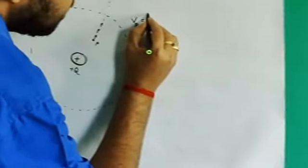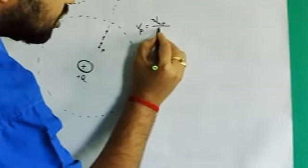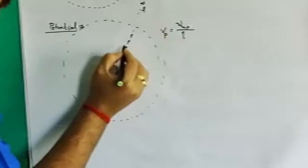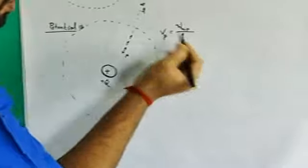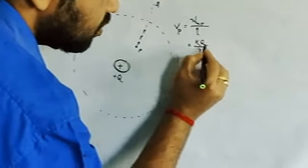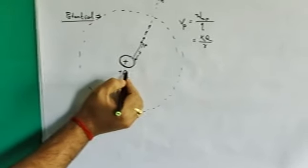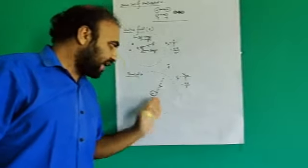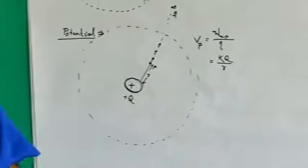Electric potential at point P is defined as the amount of work done required to bring a positive test charge from infinity to that point within the electric field. It is the ratio of work done to bring it from infinity to point P, to the charge being brought: V_P = W_(∞→P) / q. This can also be written as kQ/r, where k is constant, Q is the source charge, and r is the distance of point P from the source charge.